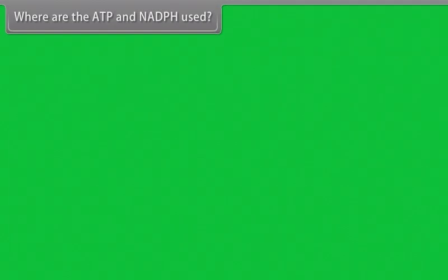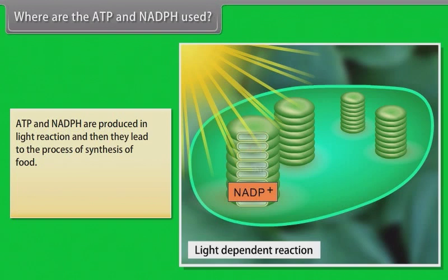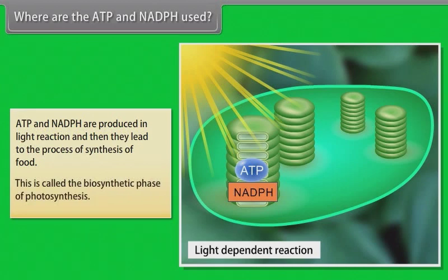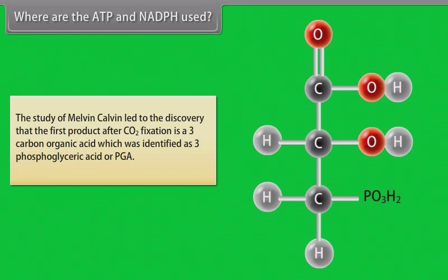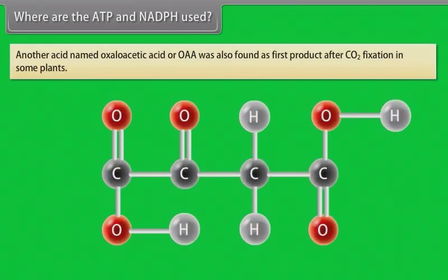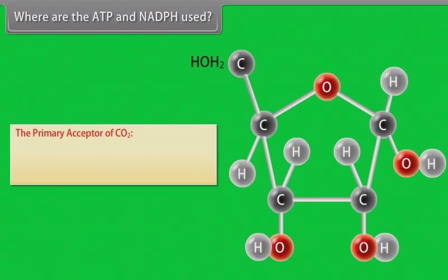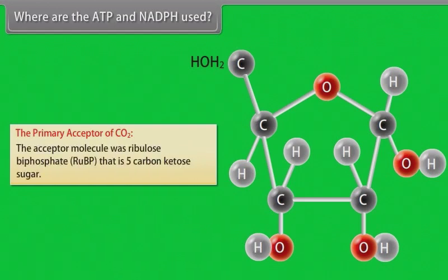ATP and NADPH produced in the light reaction lead to the process of food synthesis, called the biosynthetic phase of photosynthesis. Melvin Calvin discovered that the first product after carbon dioxide fixation is a 3-carbon organic acid, identified as 3-phosphoglyceric acid (PGA). In some plants, oxaloacetic acid (OAA) was also found as a first product after CO2 fixation. The acceptor molecule for CO2 was identified as ribulose bisphosphate (RuBP), a 5-carbon keto sugar.